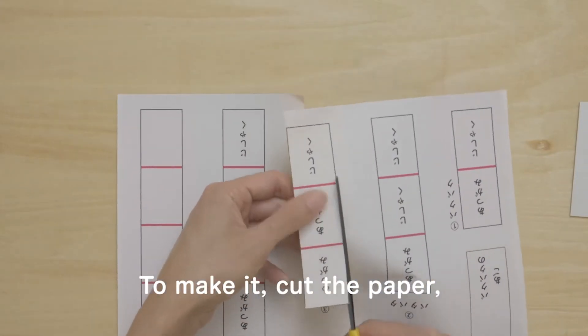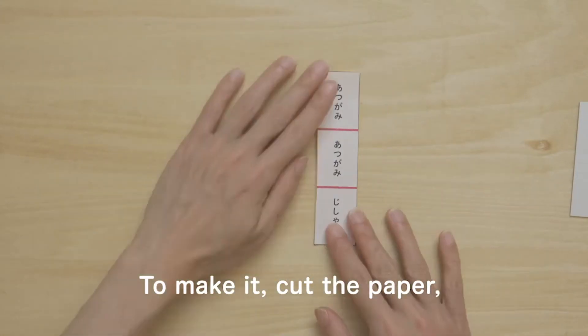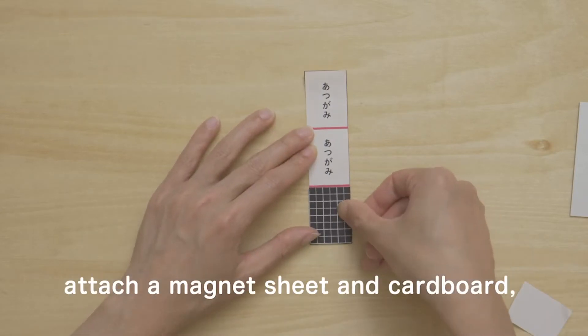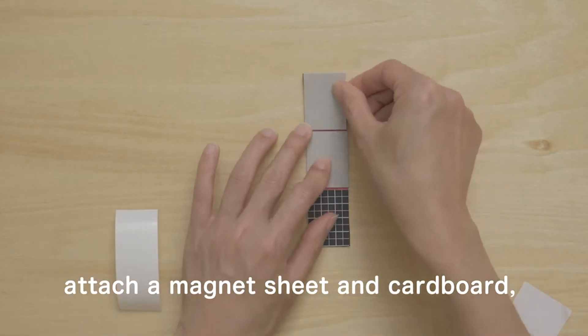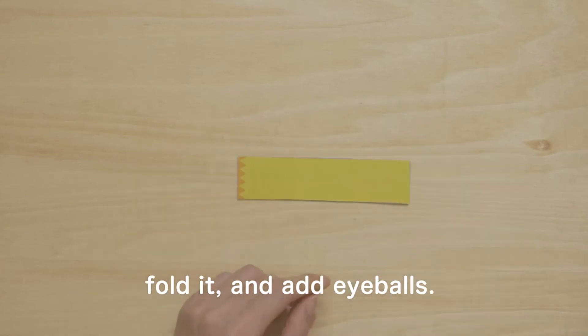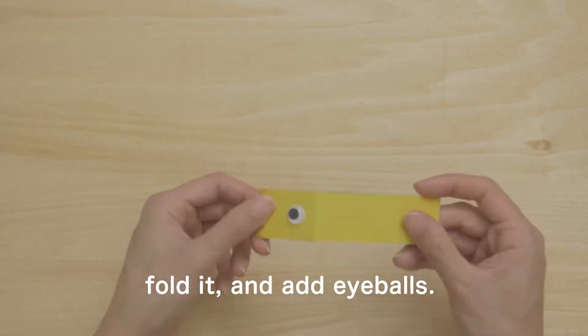To make it, cut the paper, attach a magnet sheet and cardboard, fold it, and add eyeballs. It's done.